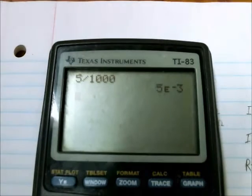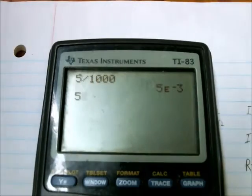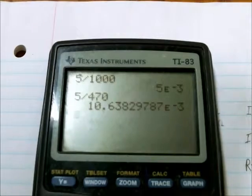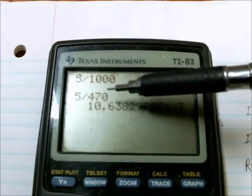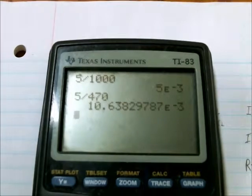And the current through R2 is, using the formula voltage divided by R2, is 10.6 milliamps.